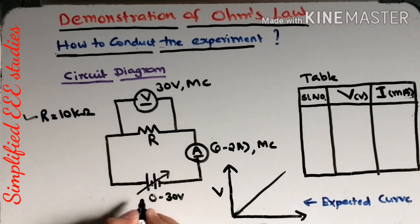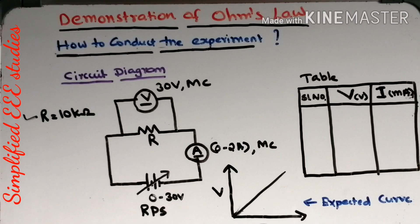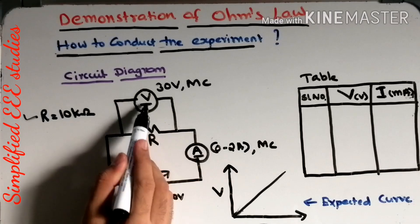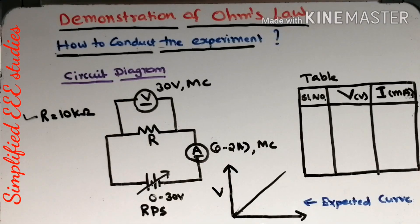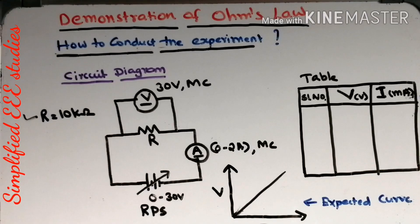Thereafter, vary the regulated power supply (RPS). You are going to vary the DC supply starting from 0 and ending at 30 volts, smoothly. The scale can be 1 volt or 2 volts per step — it depends. Whenever varying the supply voltage, I need to measure the voltage across the resistance and the current through the resistance. For each step, mark the voltage and current values and tabulate them.